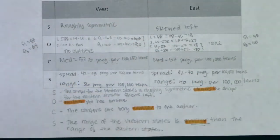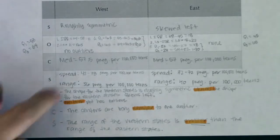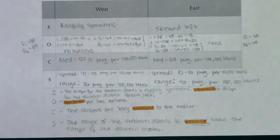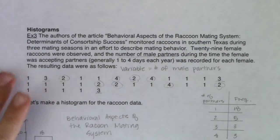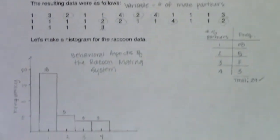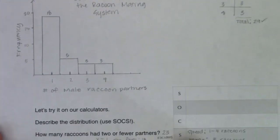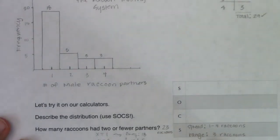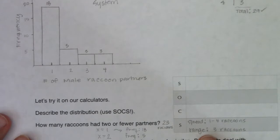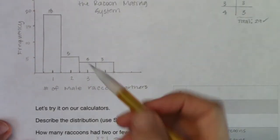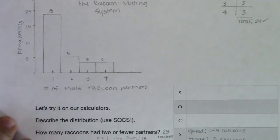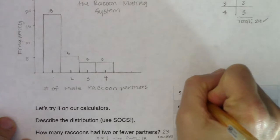In this problem I'm not actually quoting SOCS — I'm comparing the distributions. So I've got: neither plot has outliers, they have similar centers, one skewed left while the other was roughly symmetric. There are actually no numbers quoted in my write-up — it's all comparative language. The next example was the number of male partners that raccoons had. Looking at the histogram, I can see it's clearly skewed right.